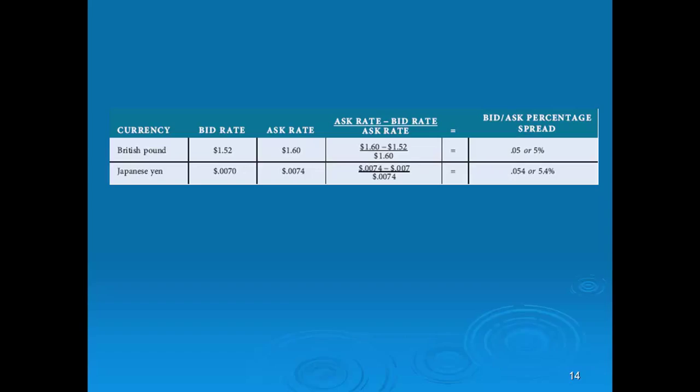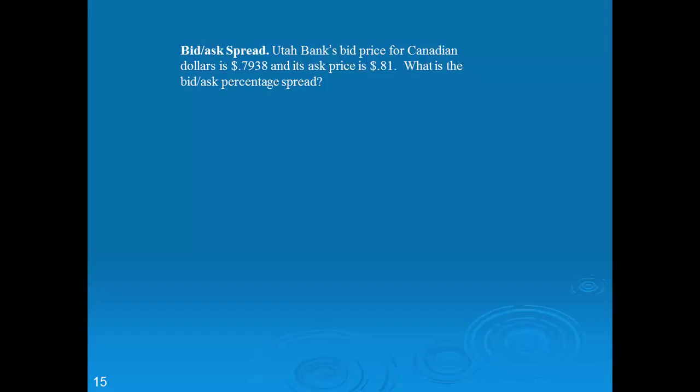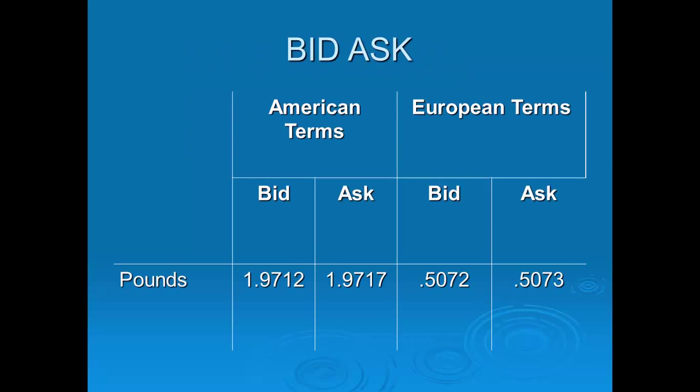Here is an example: Utah Bank's bid price for Canadian dollars is 0.7938 and the ask price is 0.81. The bid-ask spread is the ask minus the bid divided by the ask, which gives you approximately 2%.